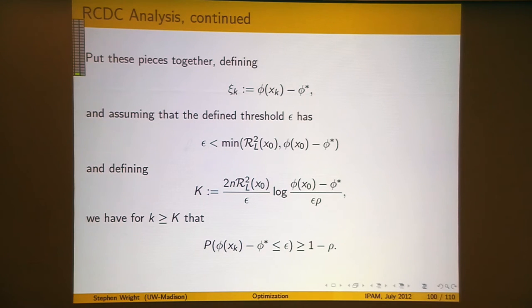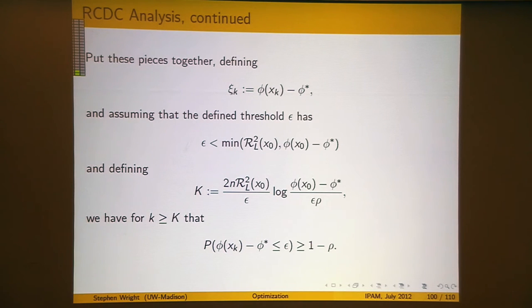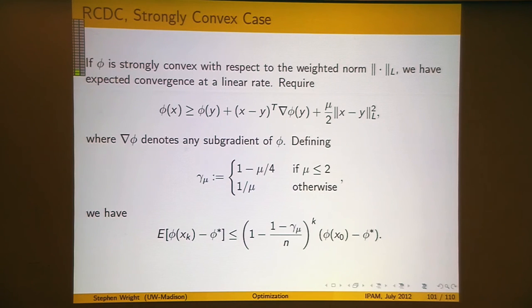Putting all these pieces together, we end up with the result: this is how many iterations you need to take to reduce the optimality gap below the threshold epsilon. It's related to the initial optimality gap, the precision epsilon you're trying to achieve, the probability of failure rho, and the initial distance from x0 to the solution — the radius of the level set. If you take this many iterations, you're guaranteed to get within epsilon of the solution with probability at least 1 minus rho.